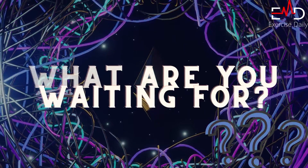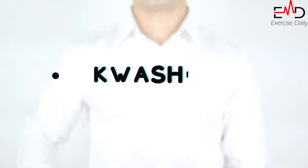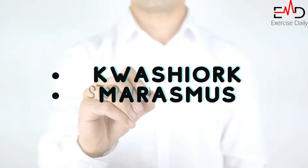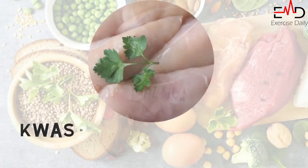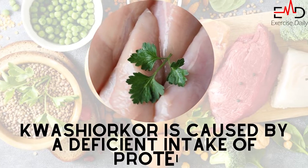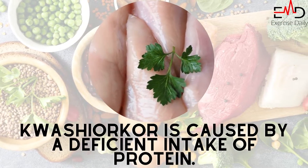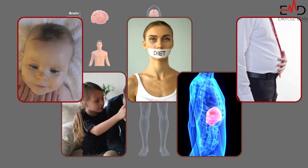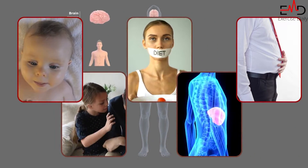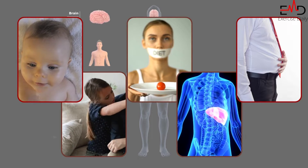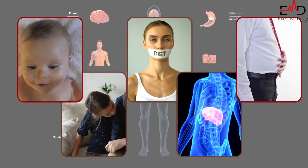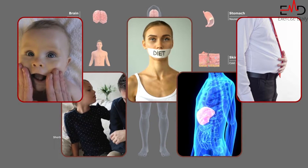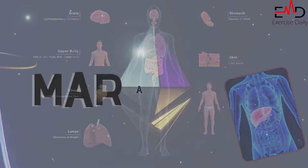There are two types of protein energy malnutrition: Kwashiorkor and Marasmus. Kwashiorkor is caused by a deficient intake of protein. Symptoms include the child's moon face, irritability, anorexia, fatty liver, enlarged liver, swelling, and edema.